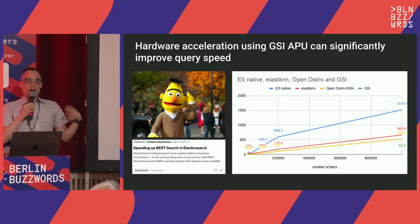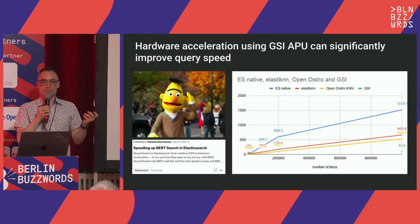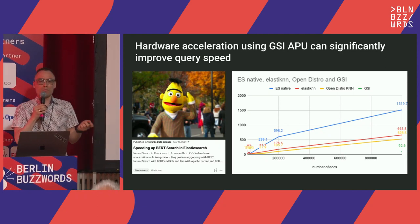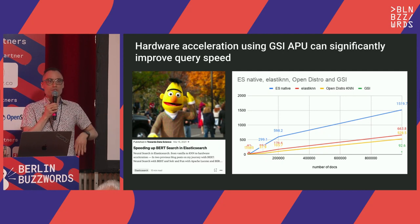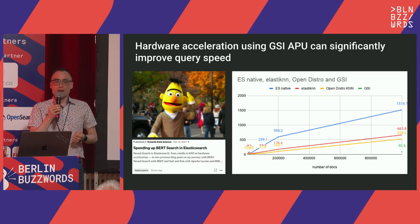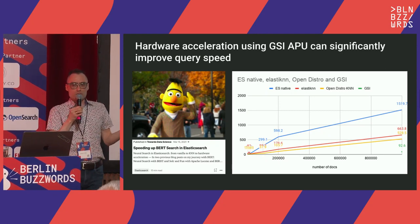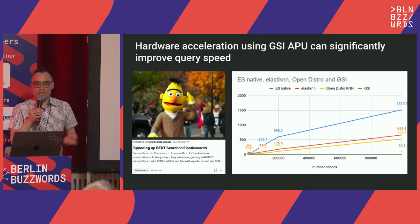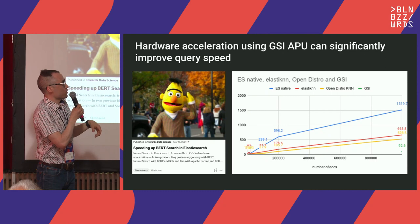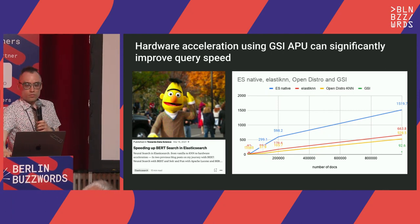A bit about motivation. Why did we decide to try the GSI APU, hardware developed specifically for vector search at scale? About a year ago, I published a blog post comparing Elasticsearch native exact KNN — which traverses all vectors — against Elastic KNN and OpenDistro with the KNN plugin, using one million abstracts from DBpedia. On the graph, with number of documents on the x-axis and query speed on the y-axis, GSI is the green dot at 92 milliseconds — basically way faster than any other solution.